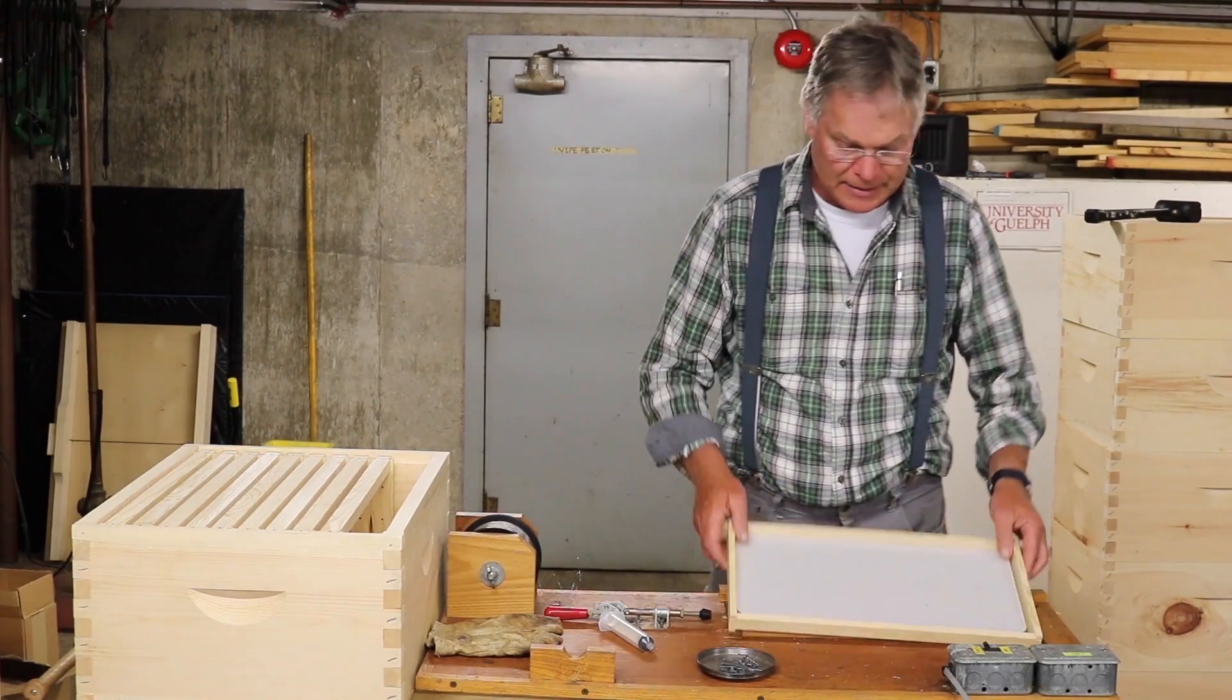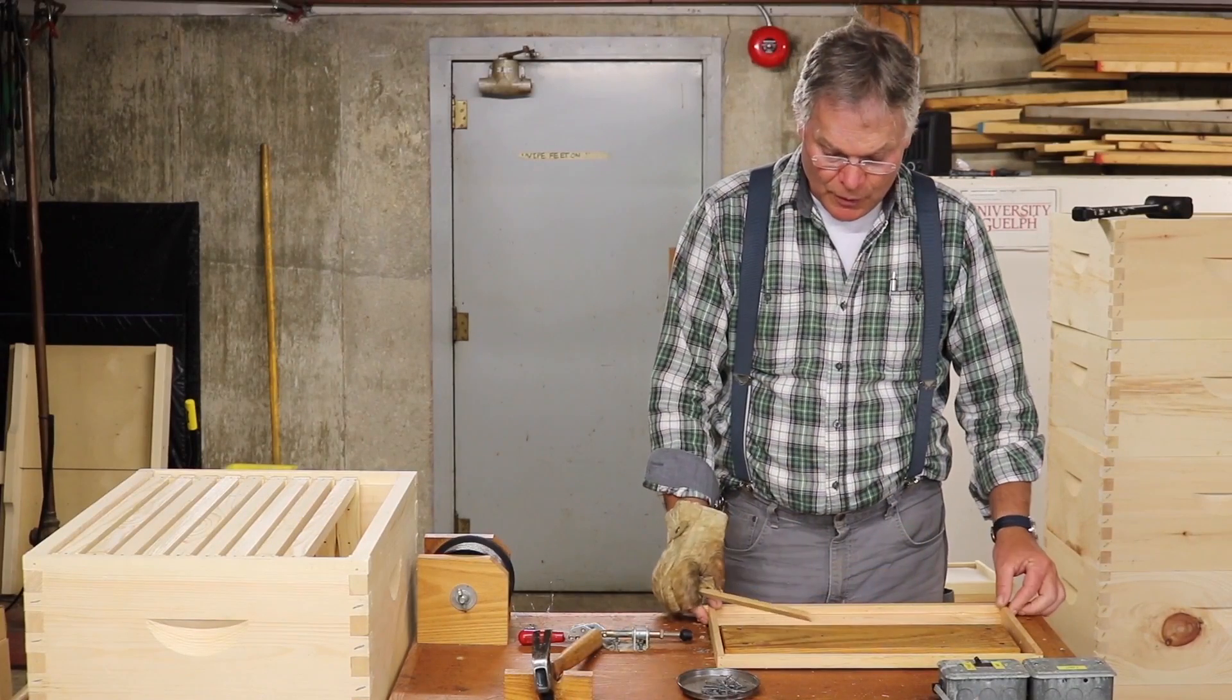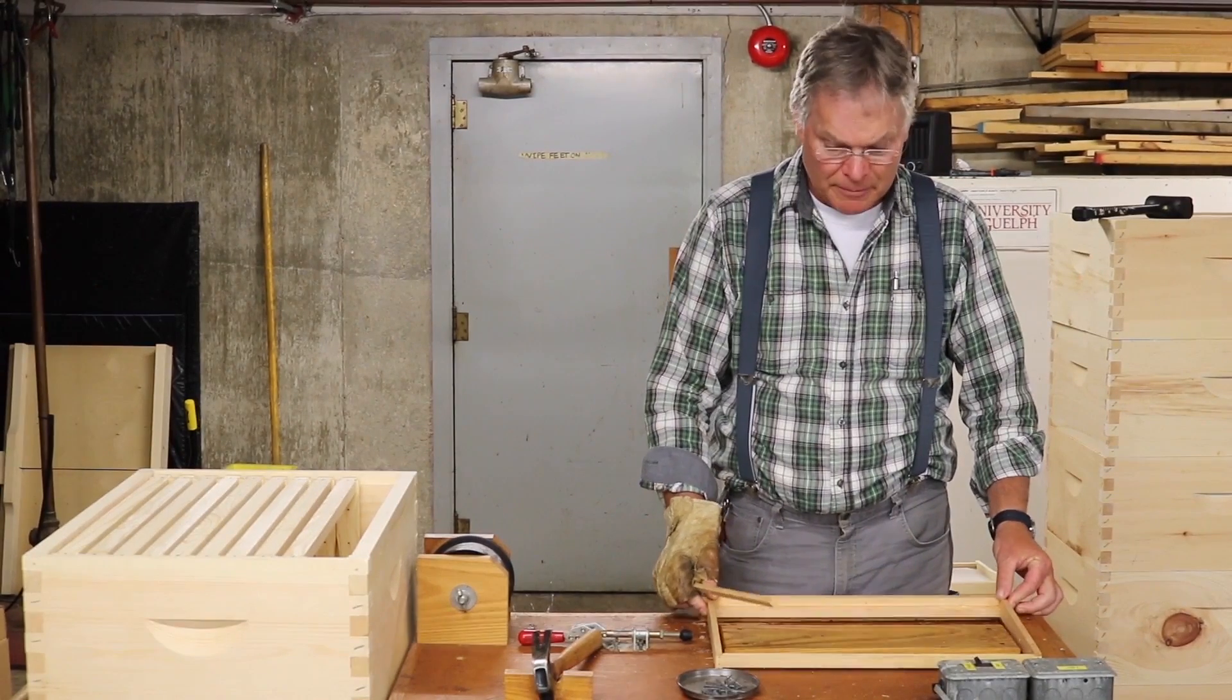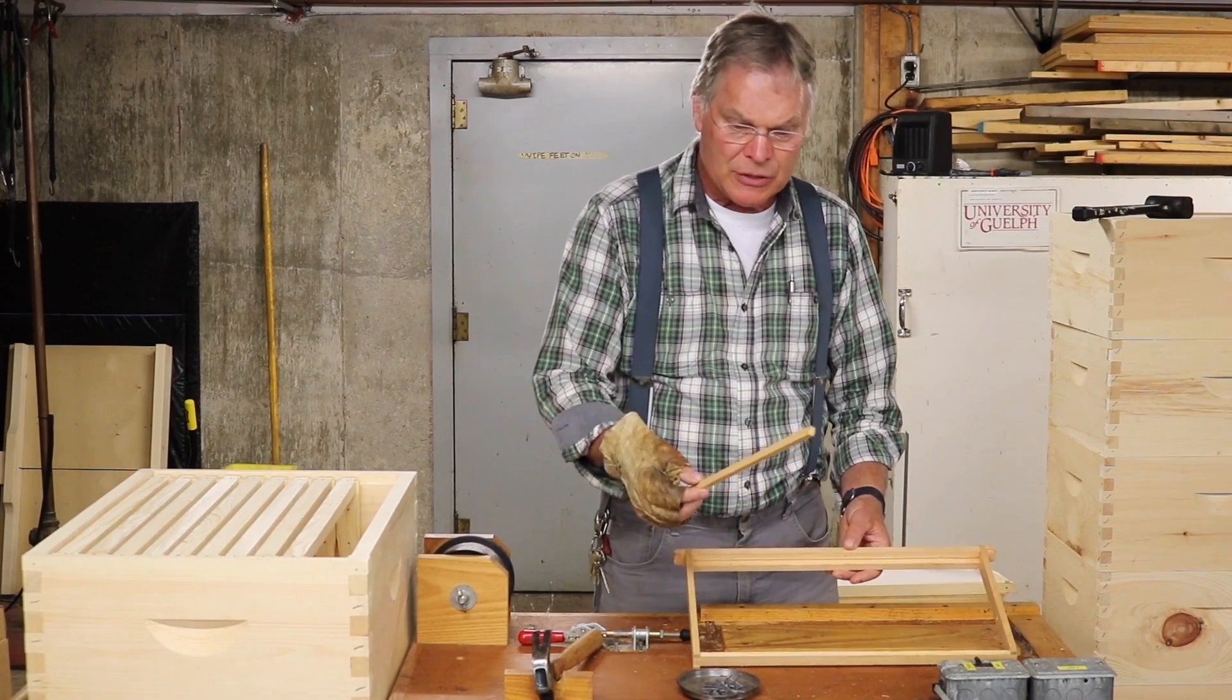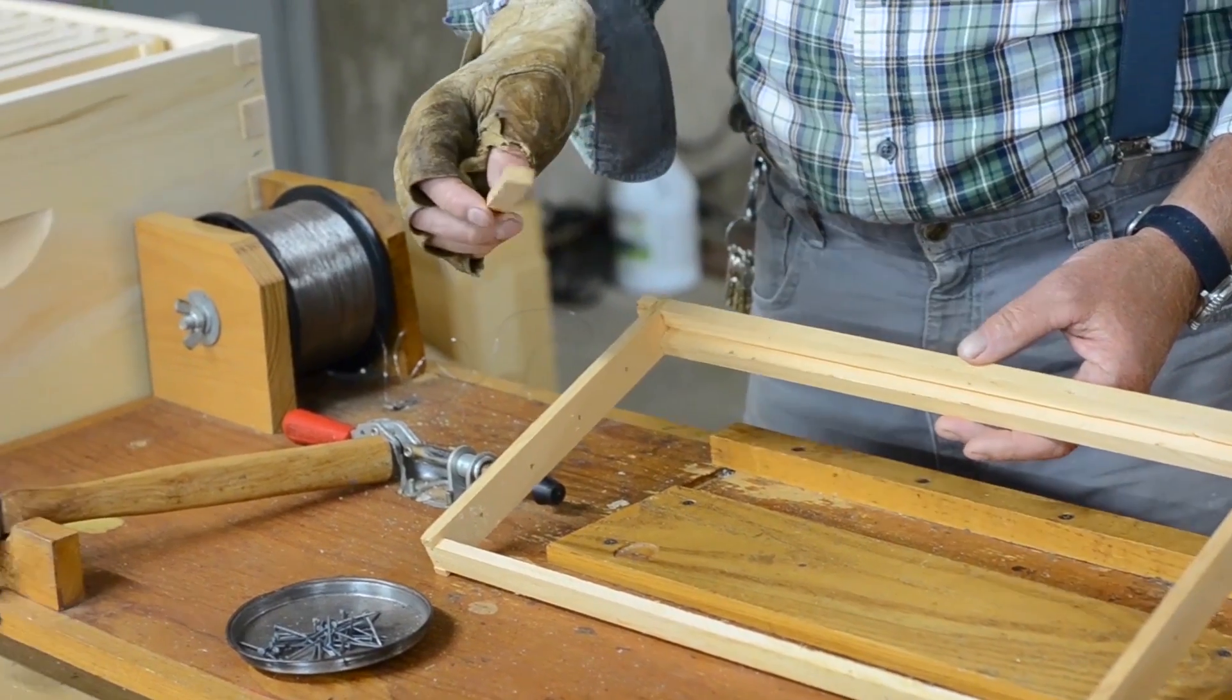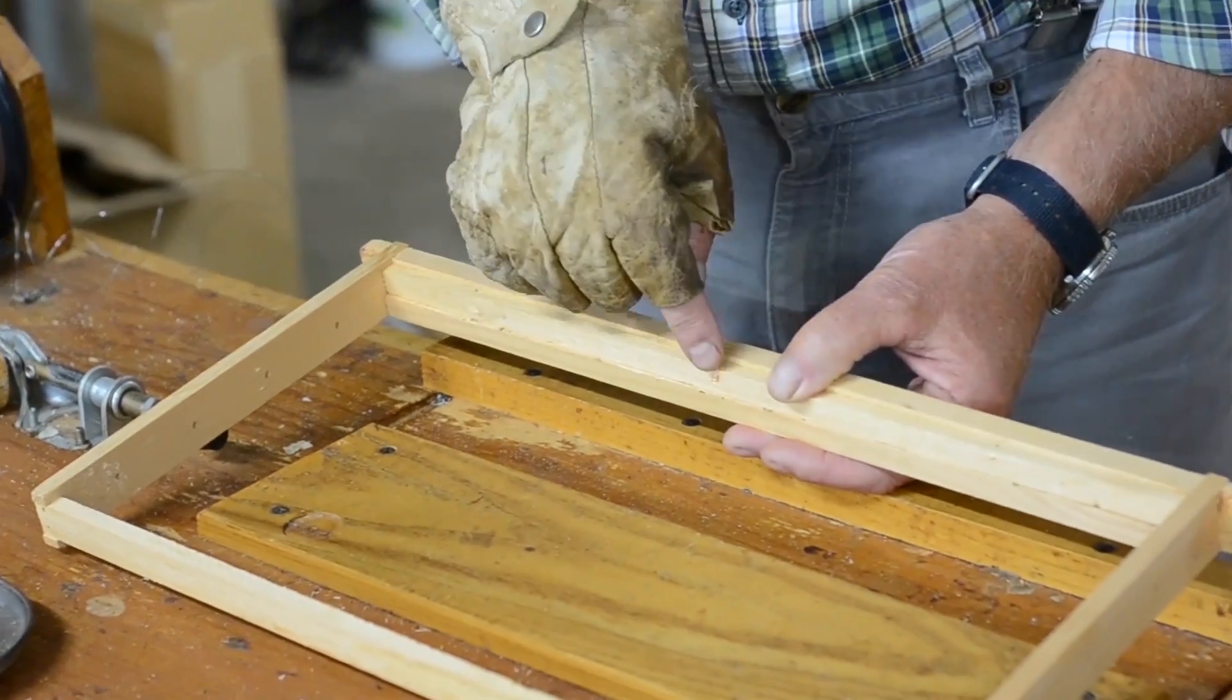Now let's talk about wiring deep frames. With frames that are made for putting wax foundation they're made differently. They have a wedge that's what we call this piece here that fits into the top and then is nailed in place with three nails.